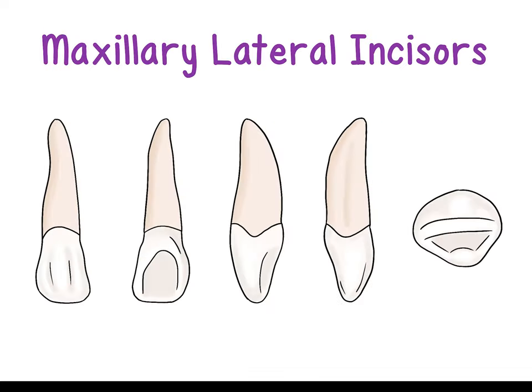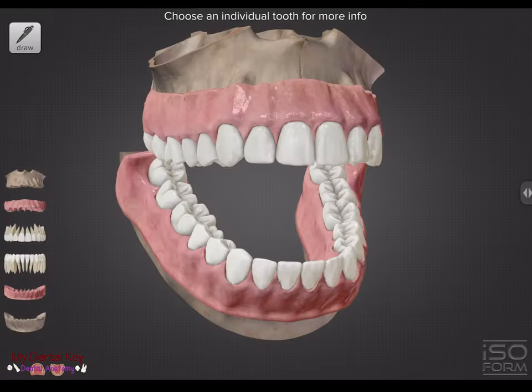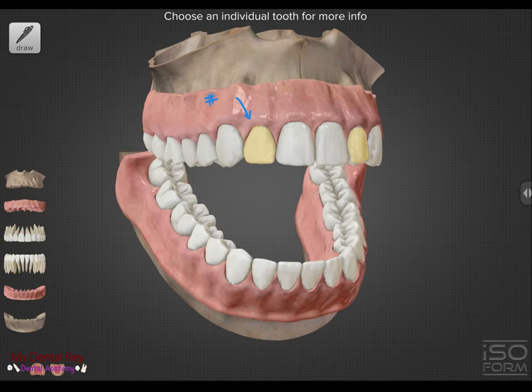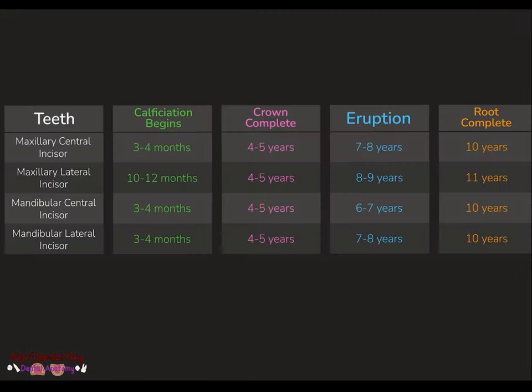In today's video we'll be going over maxillary lateral incisors, looking at tooth number seven. Maxillary lateral incisors calcify at 10 to 12 months, complete their crowns at four to five years, erupt at eight to nine years, and complete their roots at 11 years.